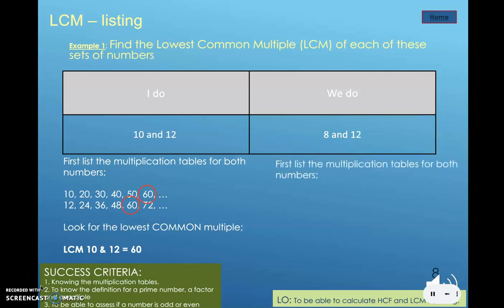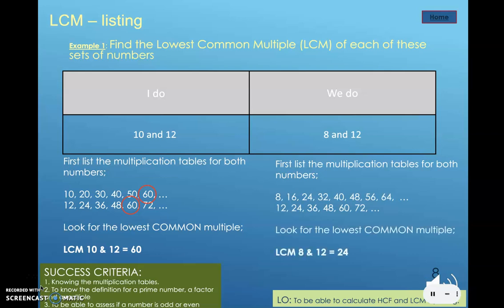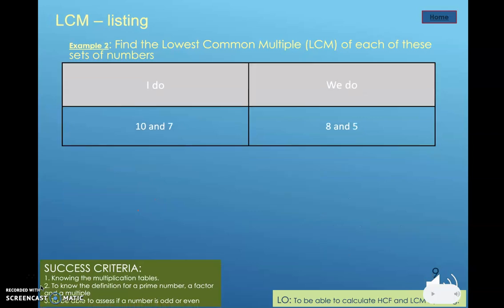For the We Do, we list the multiplication tables for both — the 8 and 12 times tables. We look for the lowest common multiple and find that to be 24. Copy down the I Do example.